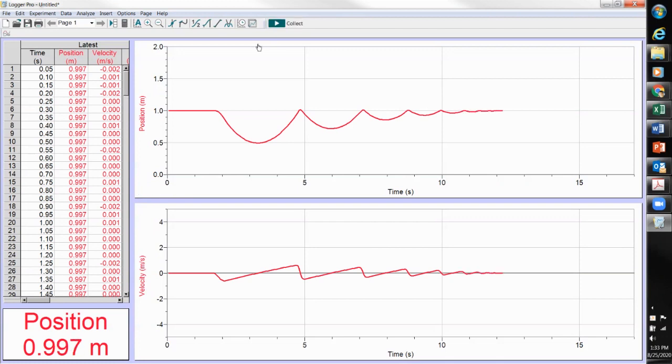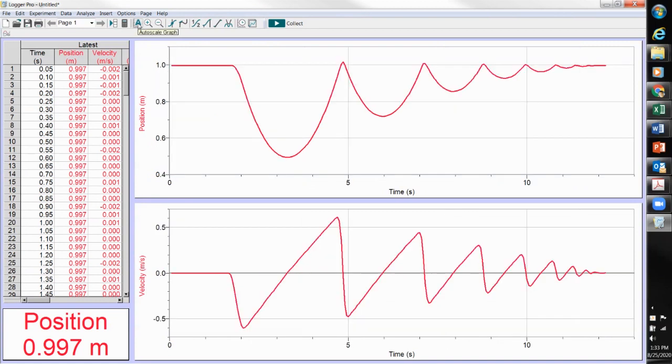And now let's auto scale our data so it takes up more space and we can read it more easily. And there we go. Our position and velocity graphs as a function of time for a cart rolling on a ramp with multiple bounces.